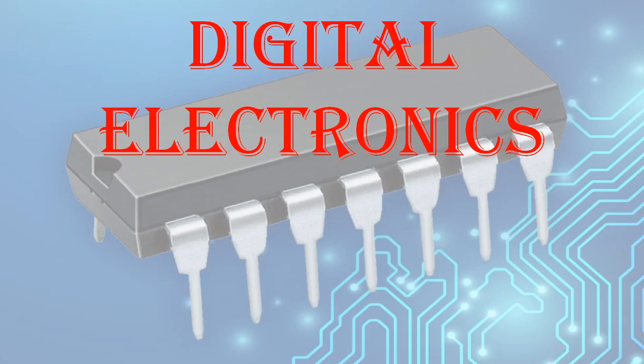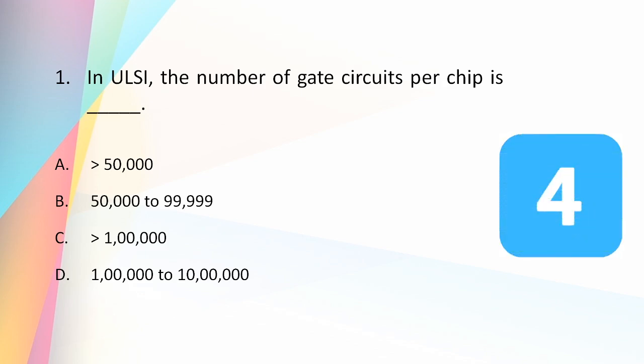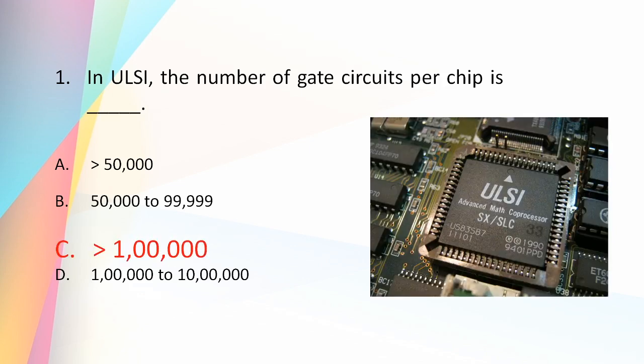Hi and welcome to the 7th MCQ video on digital electronics. The first question is: in ULSI, the number of gate circuits per chip is greater than 50,000 to 99,999; greater than 1 lakh; or 1 lakh to 10 lakh? The answer is greater than 1 lakh. ULSI stands for ultra-large-scale integration, and in ULSI the number of gate circuits per chip is greater than 1 lakh or 1 million transistors.